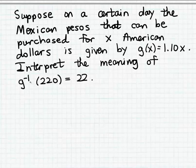Now, that means that for the inverse function, g inverse, the input and the output quantities are going to be interchanged. They're going to be reversed. So in the inverse function, the input quantity is going to be the number of Mexican pesos, and the output quantity is going to be the American dollars.